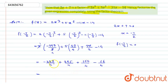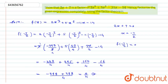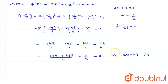Adding the positive terms gives +399/4, and the negative terms give −399/4. These cancel to give 0/4 = 0. Since f(−7/2) = 0, we have proven that 2x + 7 is a factor of f(x).